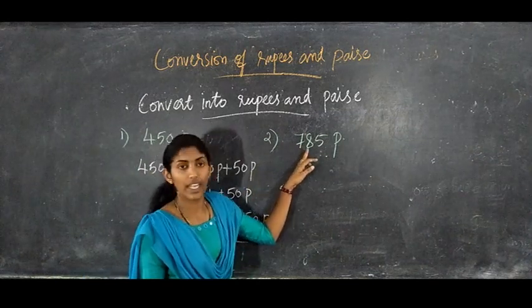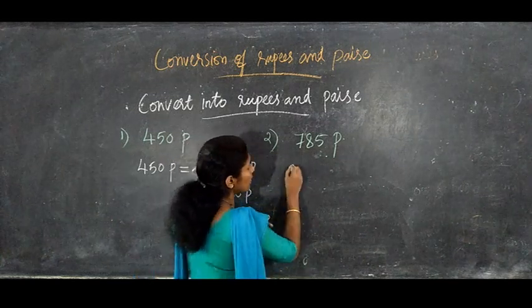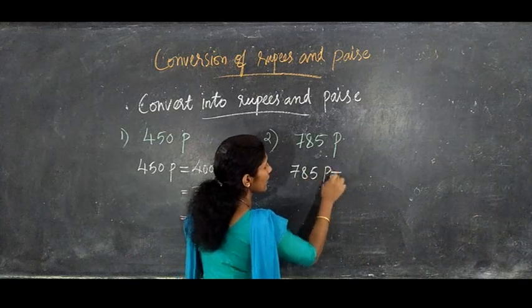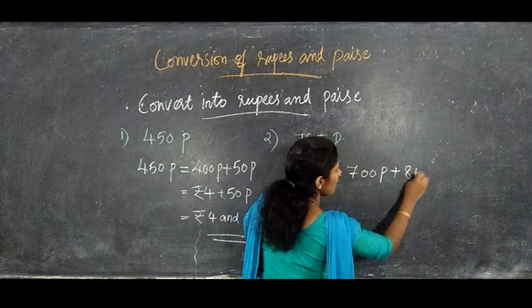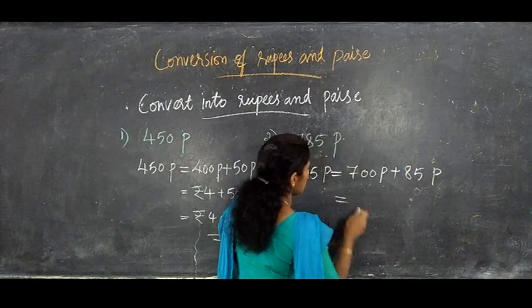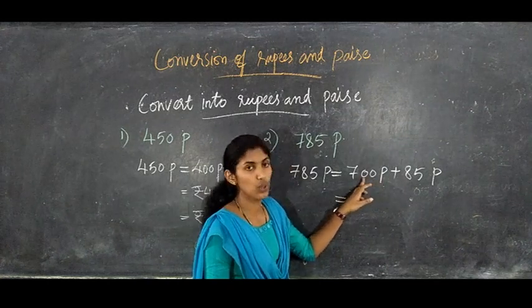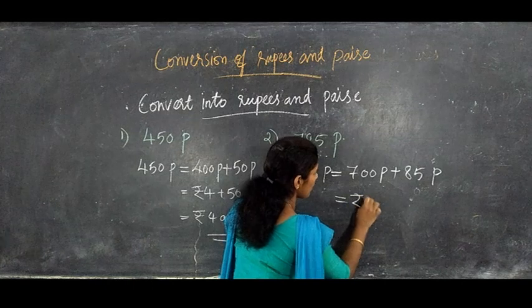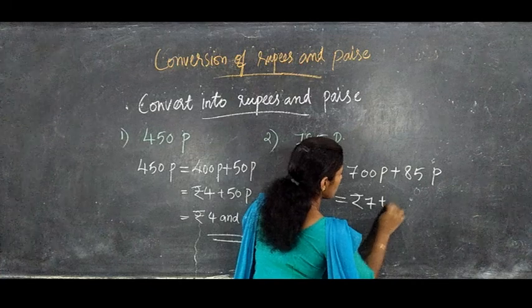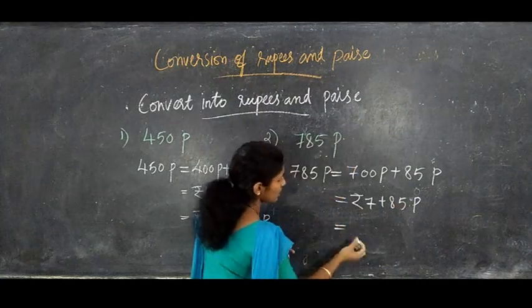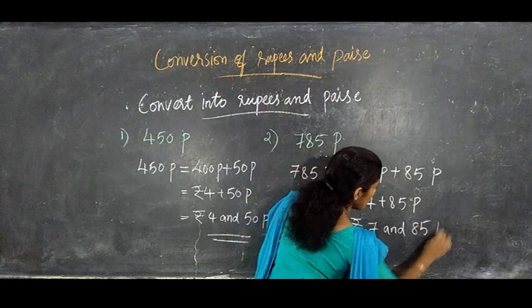Next question: convert 785 paisa into rupees and paisa. We write 785 paisa as 700 paisa plus 85 paisa. Converting 700 paisa to rupees by removing 2 zeros gives rupees 7. So 785 paisa equals 7 rupees and 85 paisa.